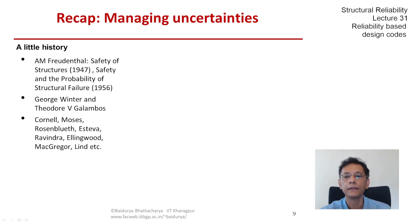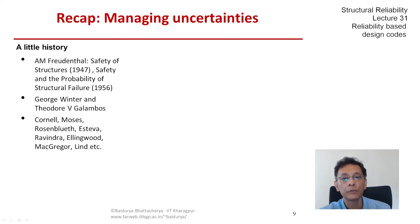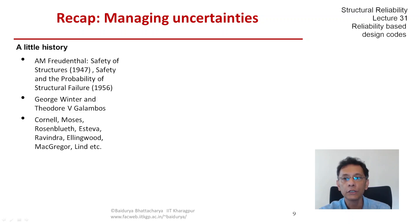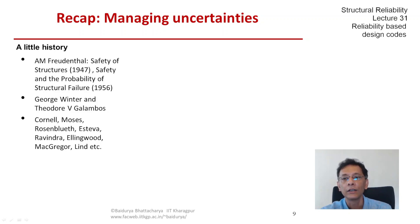the discipline saw rapid and path-breaking advances in the 1960s and 70s, not only in academic research but in professional practice as well. This far-reaching and lasting outcome was a new generation of reliability-based structural design load combinations and design codes made possible by pioneering contributions led by eminent personalities such as George Winter, T.V. Galambos, and young researchers like Cornell, Moses, Rosenbluth, Esteva, Ravindra, Ellingwood, MacGregor, Lind, and many others.